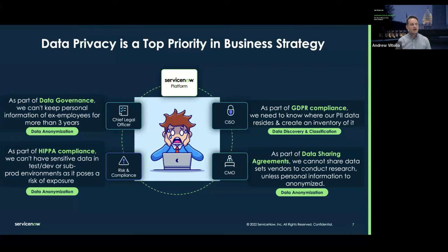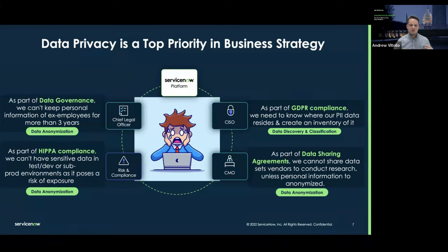One of the common use cases we see with our data privacy tools is we can't have sensitive data in test and dev environments as it poses a risk of exposure, so the data is anonymized before it gets put into those environments. And with Gen AI, there's more desire to make sense of data and share it, but there are privacy policies governing what can and cannot be done with data. Before it could be used by contractors, third parties, or even internally, you have to review that and properly handle the data.